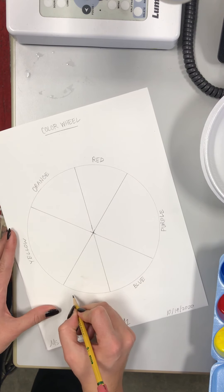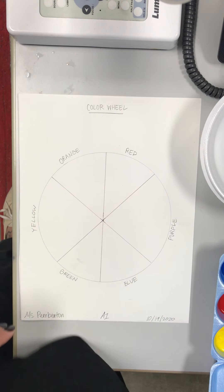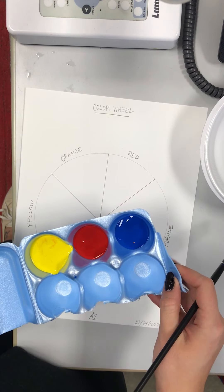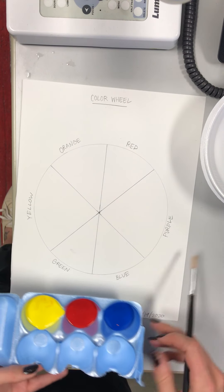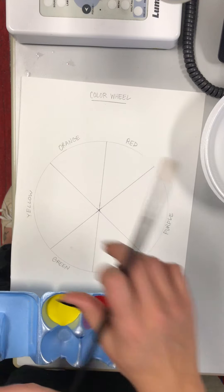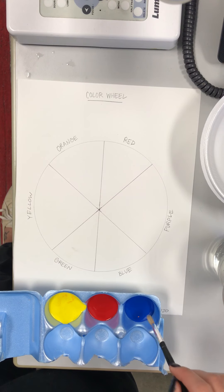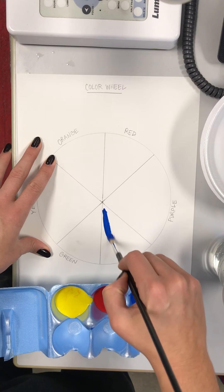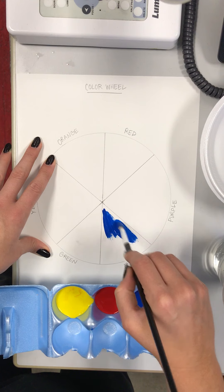Once you've got them labeled, you're gonna fill them in with paint. When you're doing this, you only need three colors. These are the primary colors: blue, red, and yellow. You're gonna need a brush of some sort and then a cup of water so that you can rinse out your brush after each color. I'm gonna go ahead and start with my primary colors. I got a little bit of water to help thin that out.